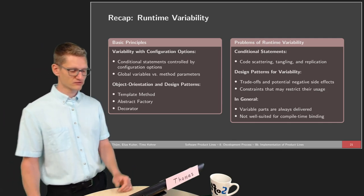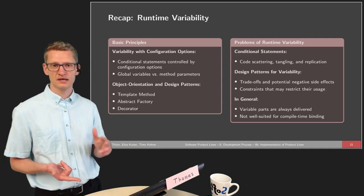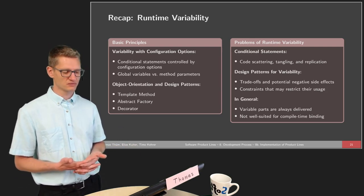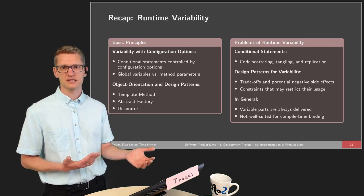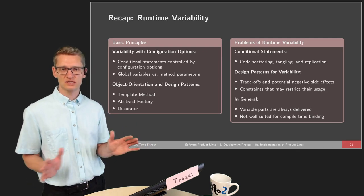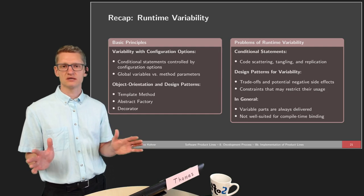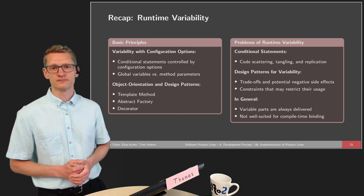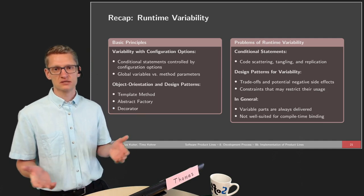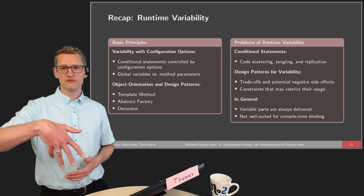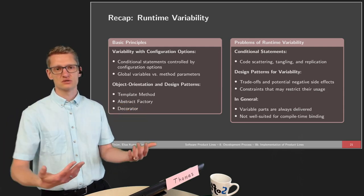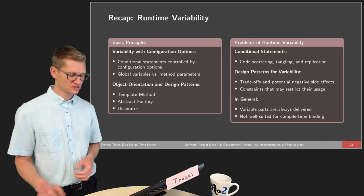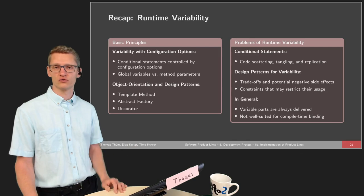But we have problems with runtime variability: we have conditional statements all over the place, code scattering and tangling, and replication of code. Even with design patterns there are still particular trade-offs — advantages but also negative side effects. Constraints may restrict usage so we cannot always make the best decision. This was especially seen when we talked about the tyranny of the dominant decomposition and cross-cutting concerns. The variable parts are always delivered, and it's not well suited for compile-time binding and the overall vision of product lines.